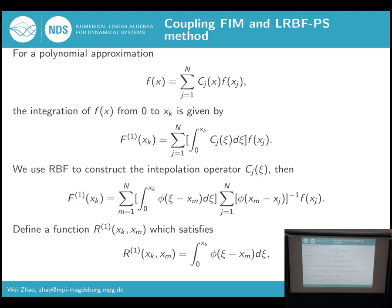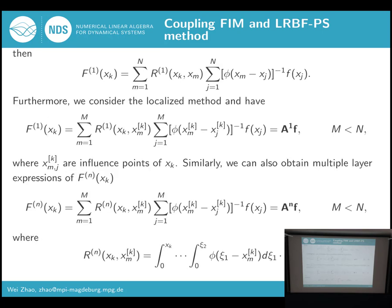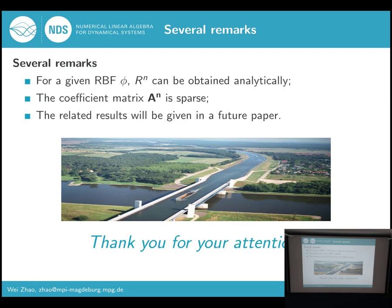For the coupling idea, we still start from a polynomial approximation for f and the integration of f, then we consider the cardinal RBF. For the integral part, we define a new function R to replace this part. We still consider the localization idea. Finally, we obtain the one-layer integral type RBFPS method, and similarly we can also obtain the multiple-layer integration type RBFPS method. For a given RBF φ, the coefficient matrix A1 can be obtained analytically, and the coefficient matrix is very sparse because of the localization. The related results will be given in a near-future paper.